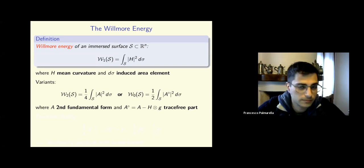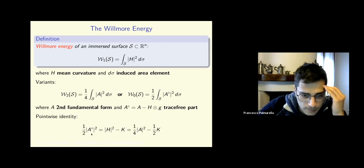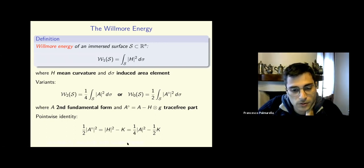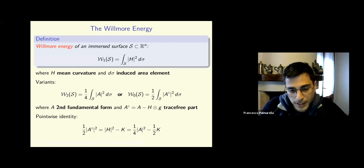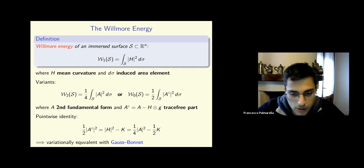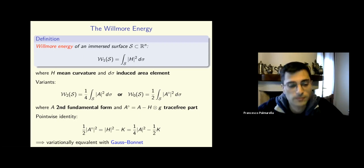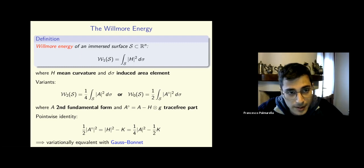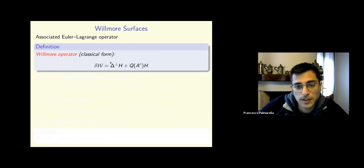You may find the name Willmore energy attached to two possible variants: one with a normalization factor and the full norm of the second fundamental form, or a variant where A-circ is only the trace-free part of the second fundamental form, with G being the induced metric. There is a pointwise identity involving the Gauss curvature K, explaining the normalization. By the Gauss-Bonnet theorem, these three Lagrangians defined over immersions of closed smooth surfaces with the same genus are completely equivalent from a variational point of view, at least for smooth immersions.